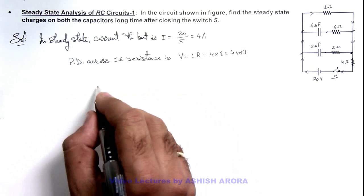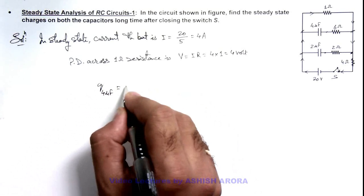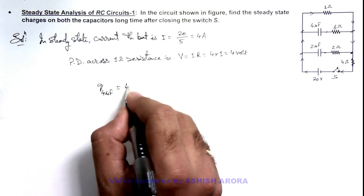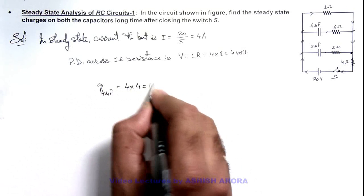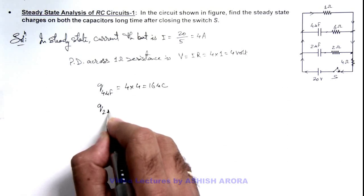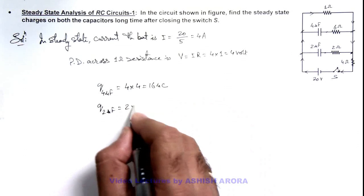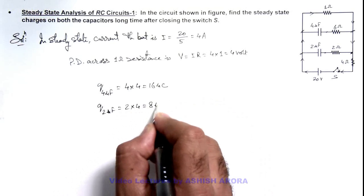Now we can write the steady state charge on 4 micro farad capacitor is CV, so it is 4 multiplied by 4, this is 16 micro coulomb. And charge on 2 micro farad capacitor in steady state will be 2V, that is 2 into 4, that is equal to 8 micro coulomb.